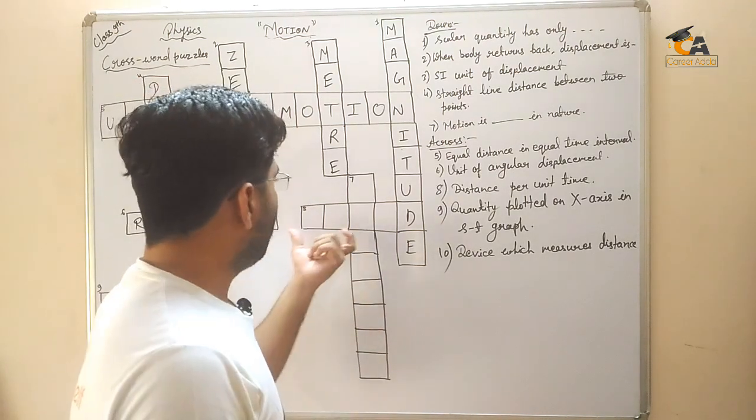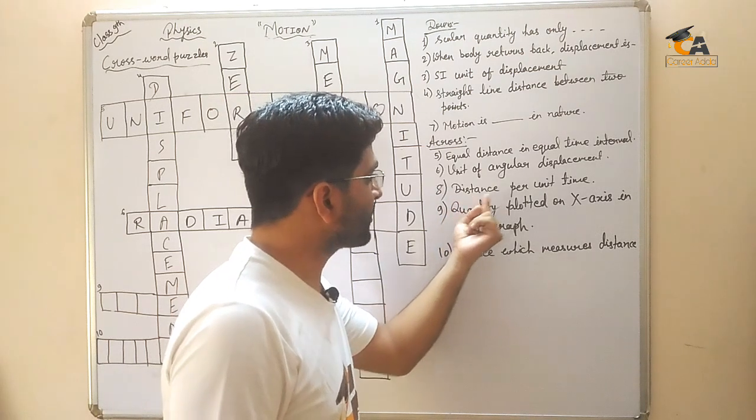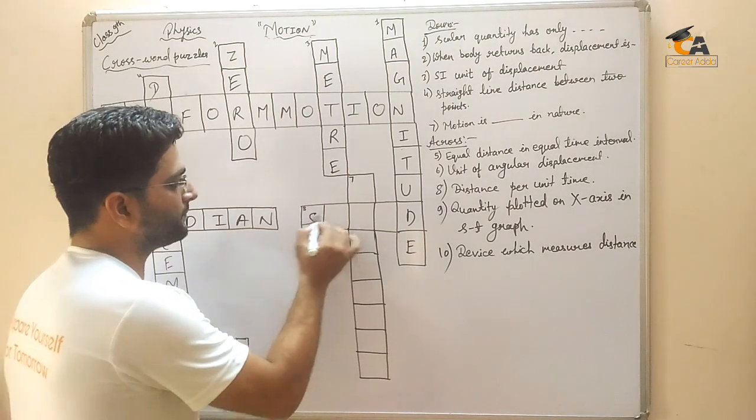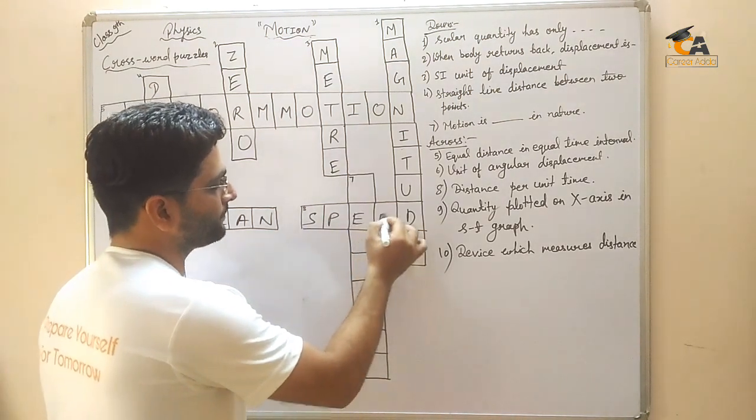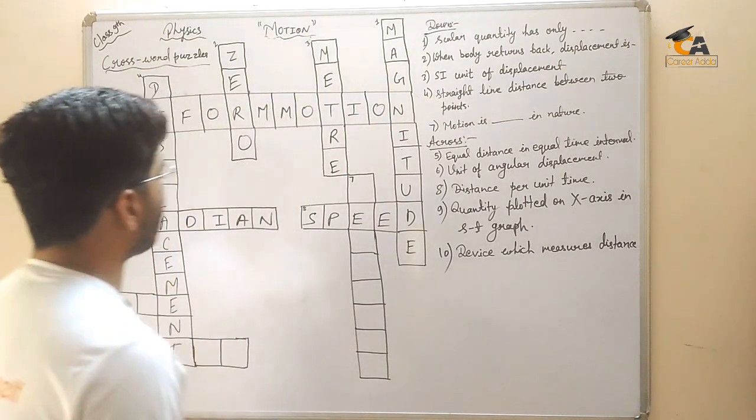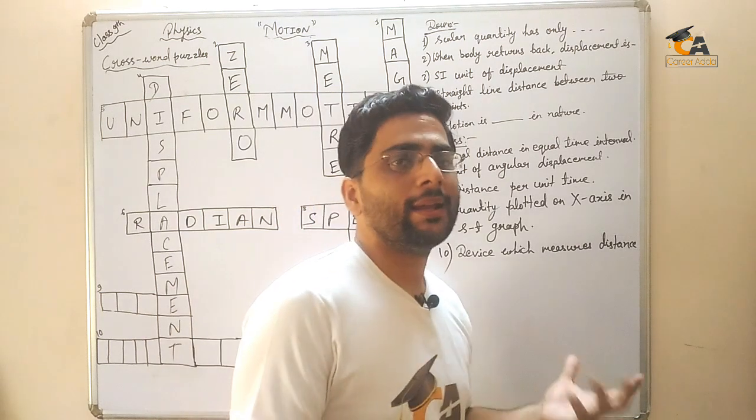Next. Eight, we have also made a letter. Distance per unit time. Come on. Fast. Distance per unit time, what do we call? Speed. Very good. Next. A lot of children have solved. So I'm going to solve it. You should check the answers that you are correct.